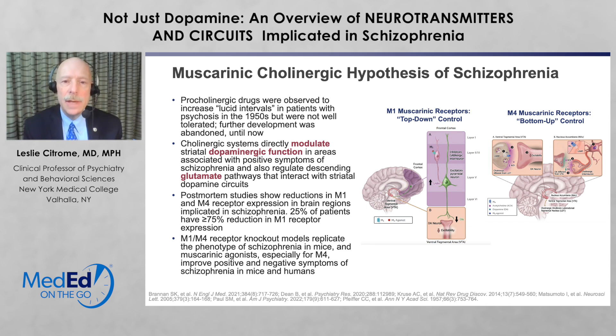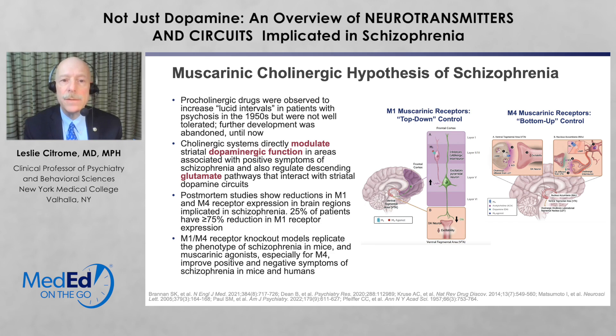Together, this combination can decrease psychotic symptoms and is relatively tolerable because the trospium added to the xanomeline helps mitigate against some of the GI side effects that we would otherwise expect with cholinergic agonism. Clinical trials have resulted in positive effects in terms of psychotic symptom reduction, so stay tuned for that one.